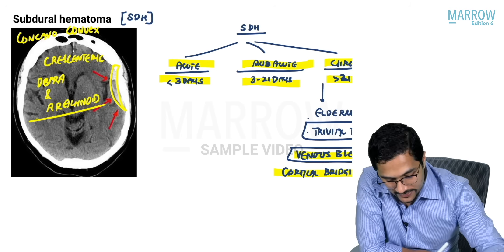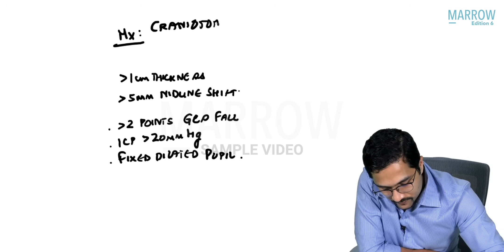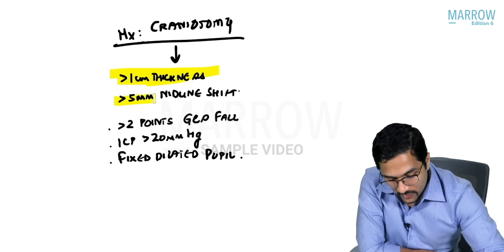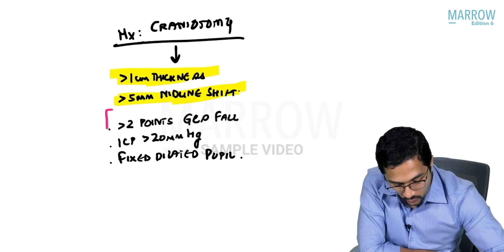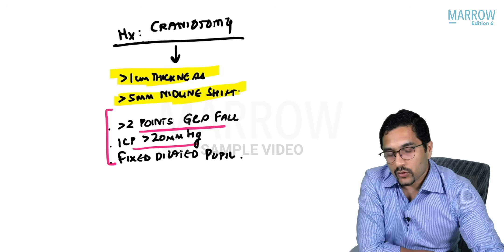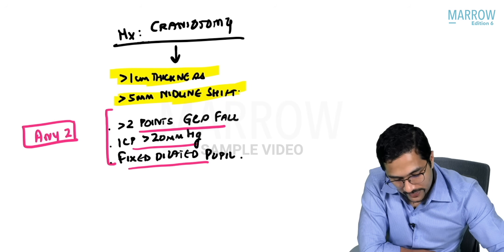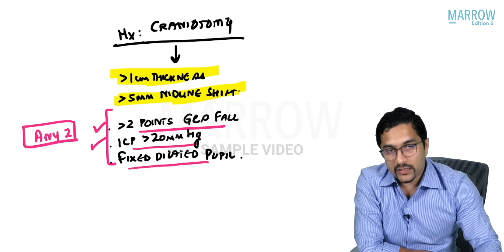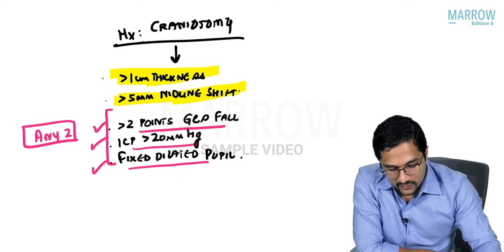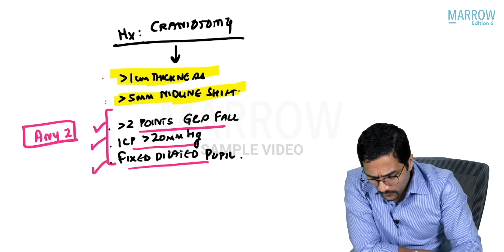Management of SDH is craniotomy to evacuate the hemorrhage. Indications for craniotomy include: clot thickness more than 1 cm, midline shift more than 5 mm, or — any two of the following — GCS fall of more than 2 points, intracranial pressure more than 20 mmHg, or fixed dilated pupil. If any two of these criteria are met, craniotomy must be performed.